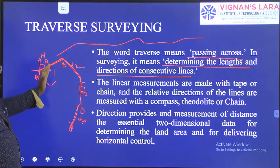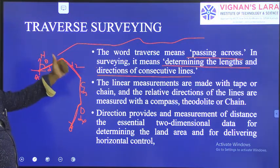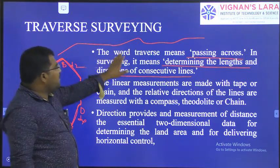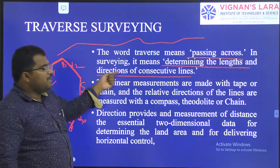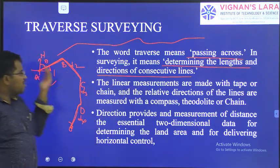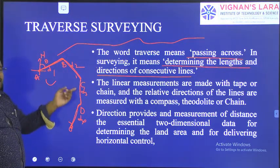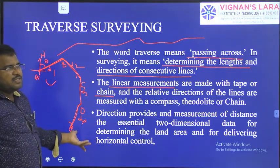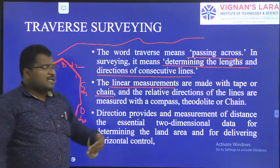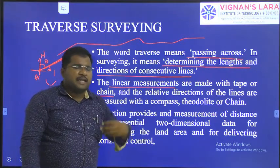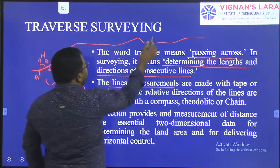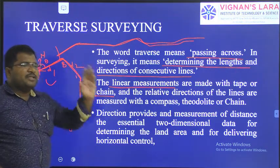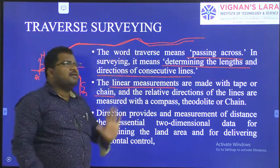The lengths are measured with the help of a chain or tape, and the directions and angles are determined with the help of a theodolite or compass. Whatever instrument is available for measuring angles, we use it. Traverse surveying is used when constructing a new bypass road or highway — you need to measure the total distance, the width of road required, and every such value.